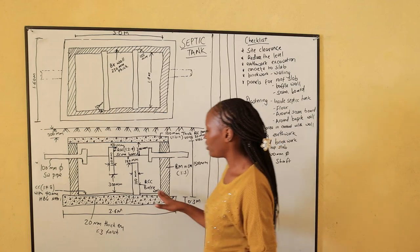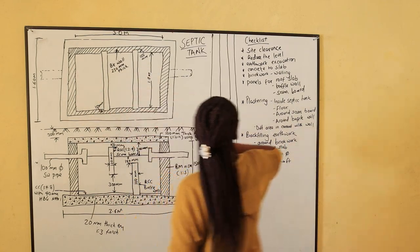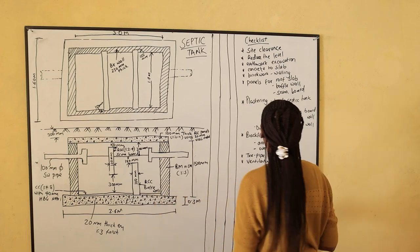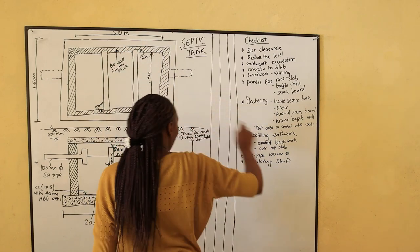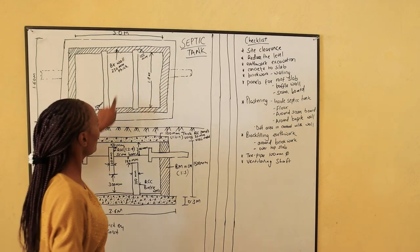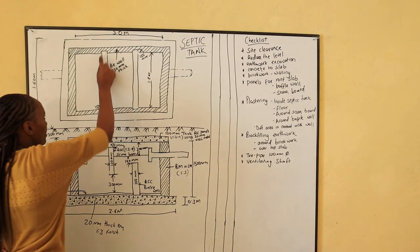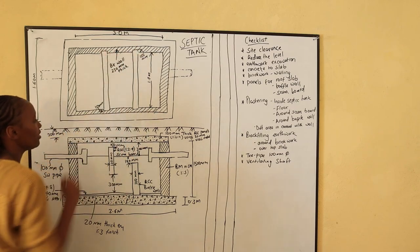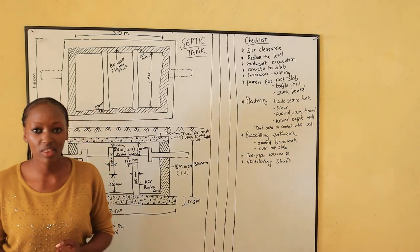Then we shall come to doing the finishes. We shall do plastering inside the septic tank — starting with the floor, then all around the scum board, then around the buffer walls, and all around the inside walls. However, there is an area in contact with the walls where we do not need plaster. So we shall write this in the checklist to remember to deduct the wall contact area. We shall deduct for the thickness on all four sides — that is 100mm each. After all construction is done, we shall backfill the soil.